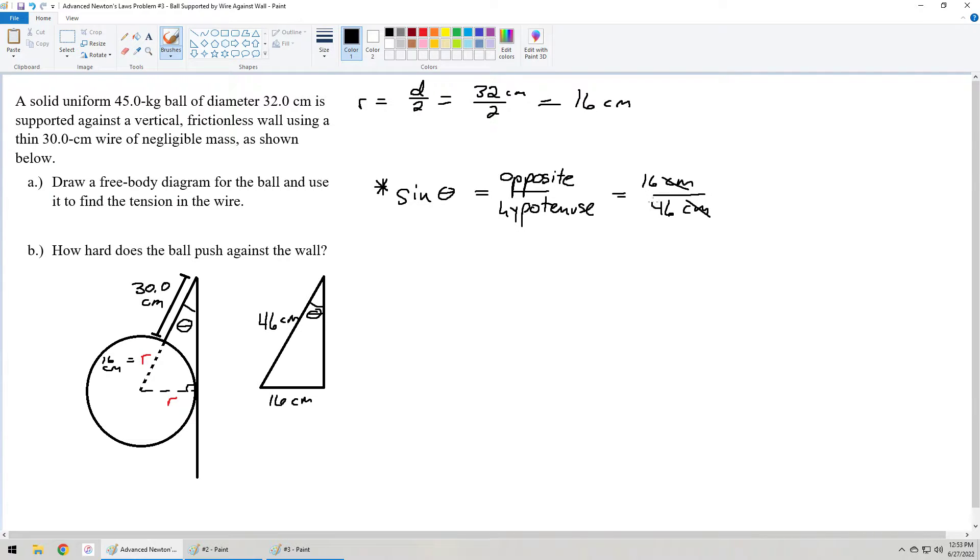The units cancel out, and we have this fraction, 16 over 46. You may feel compelled to want to simplify it, but you don't have to. We take the sine inverse of both sides of this equation. So the sine inverse of sine theta is equal to the sine inverse of 16 over 46.